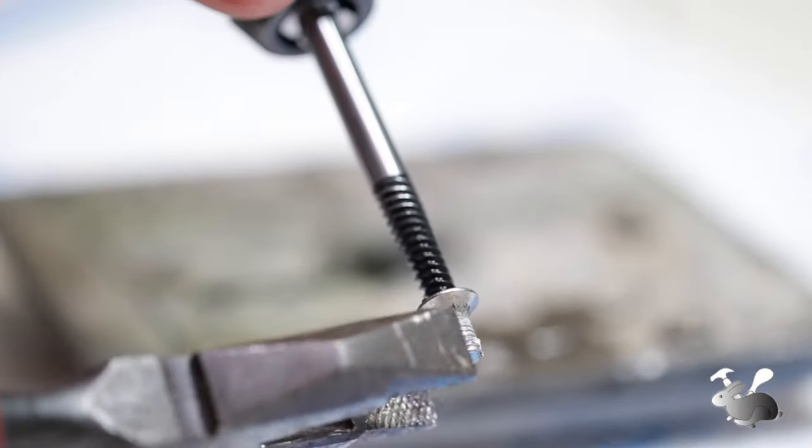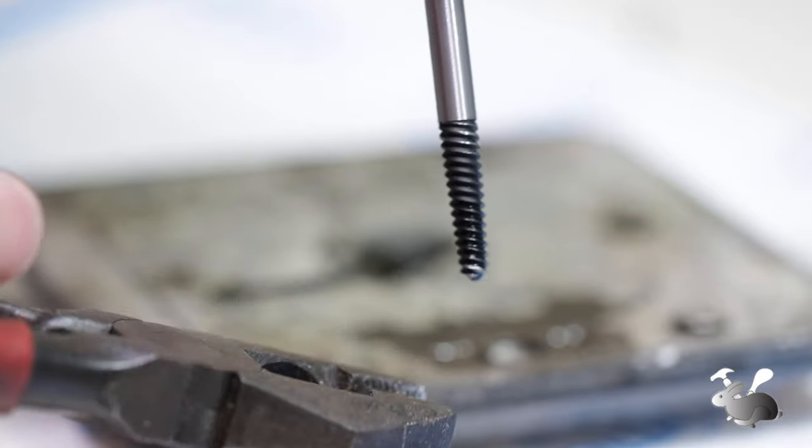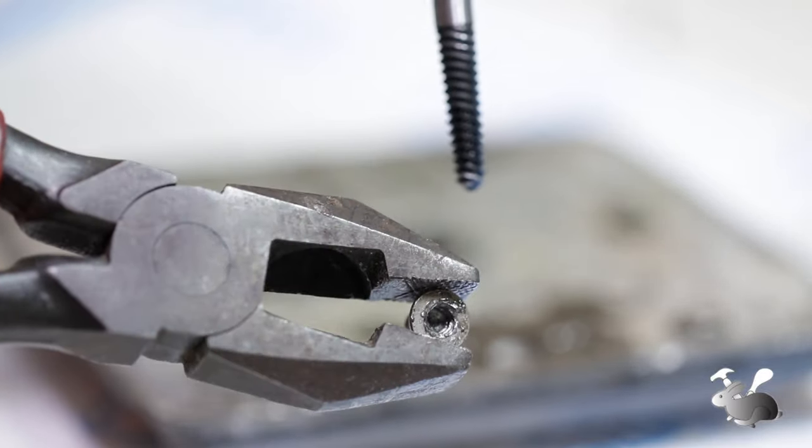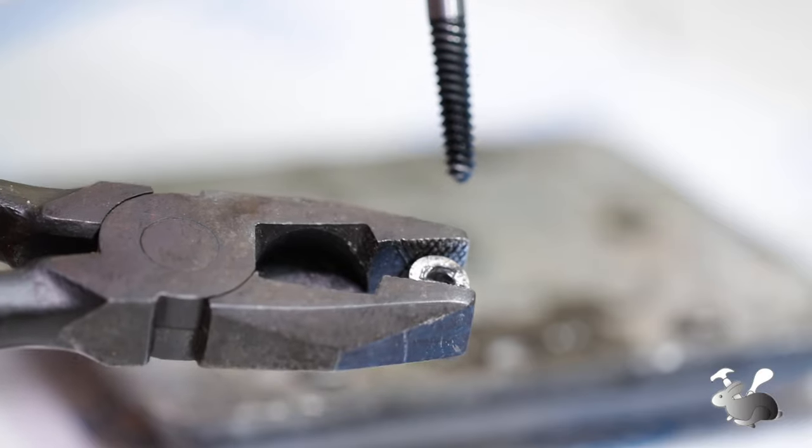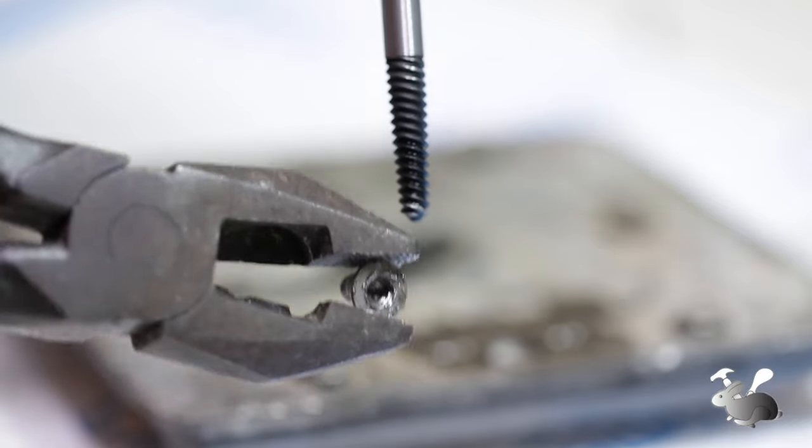So as you can see here that the screw is stuck to the screw extractor, and the only way to pull it out is by holding it with the plier and turning the screw extractor clockwise to come off from the screw. Okay, that's it. I hope you enjoyed it and found it useful.